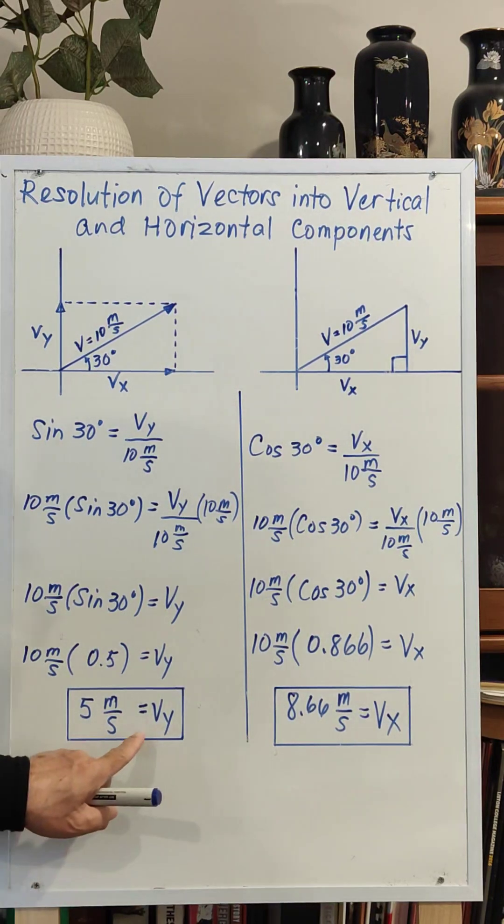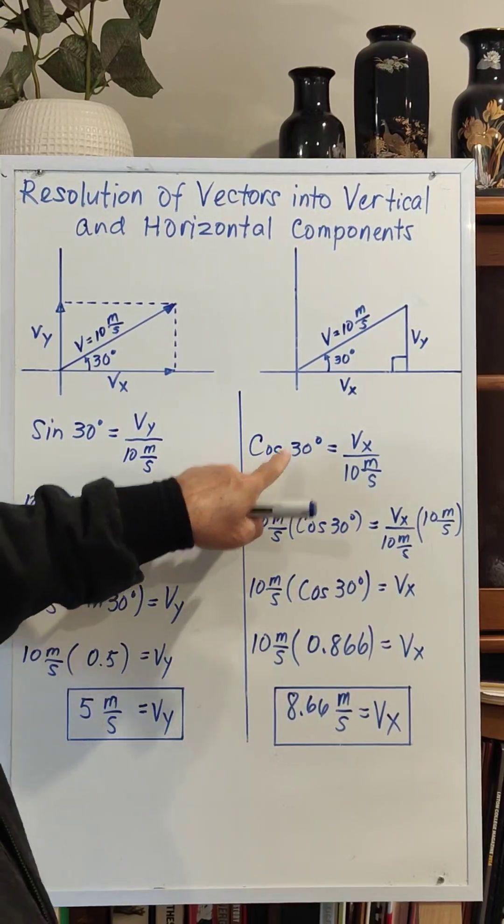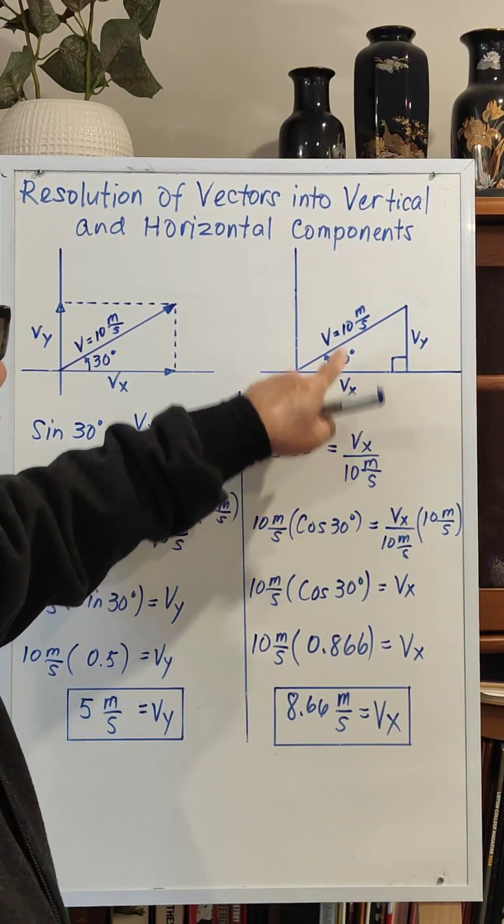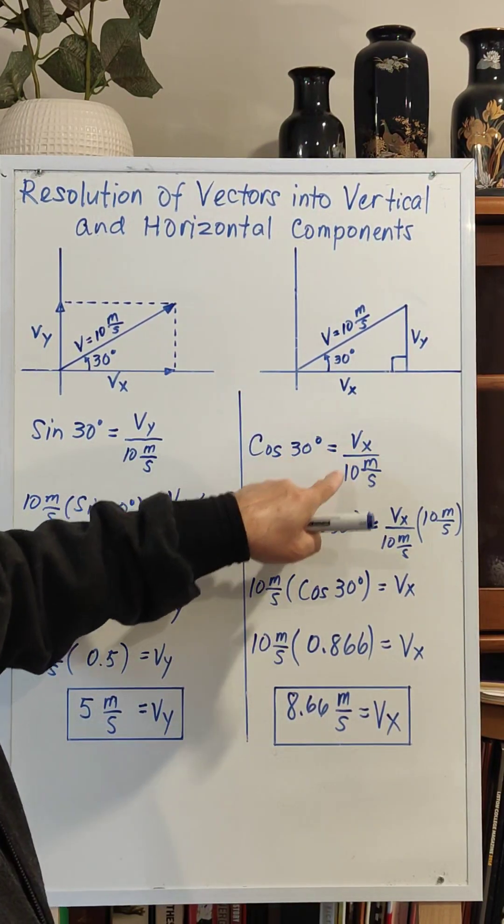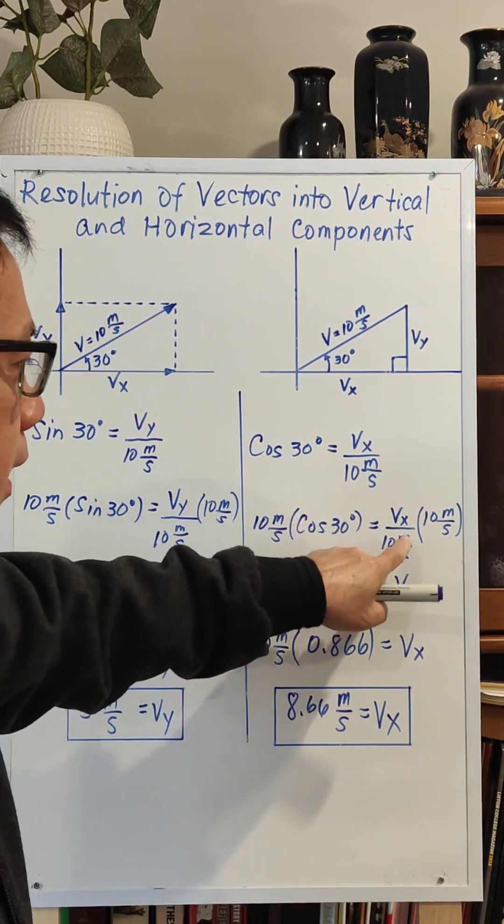Your horizontal component is cosine of 30, which is adjacent over hypotenuse, equal to vx over 10 meters per second. Multiplying both sides by 10 meters per second to cancel this, we have 10 meters per second times cosine 30 is equal to vx.